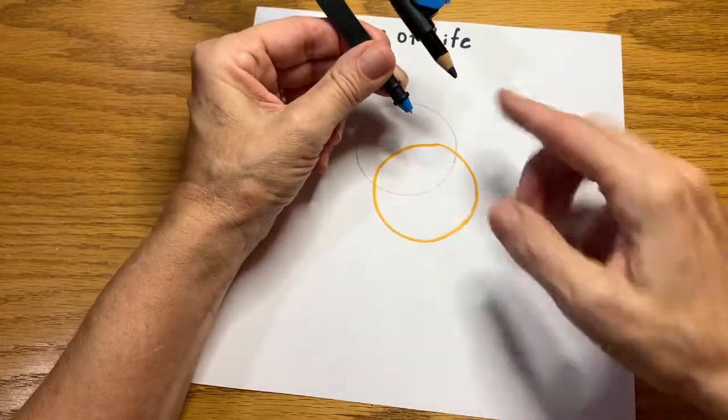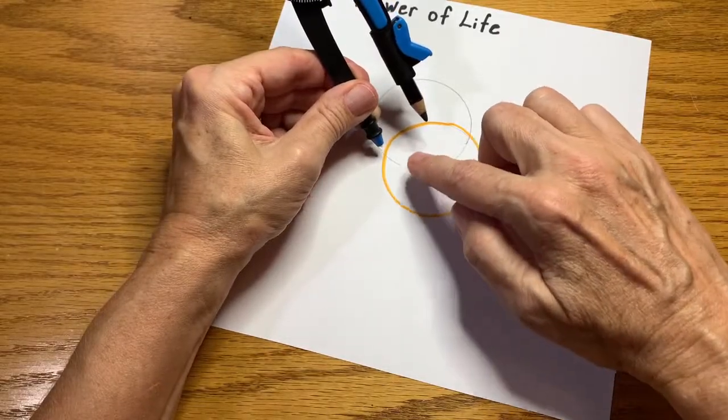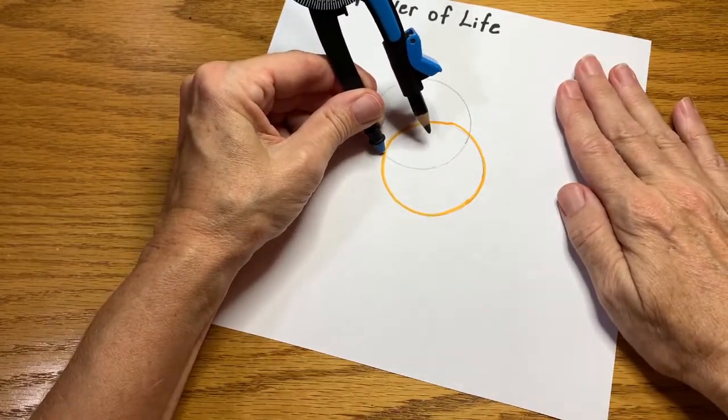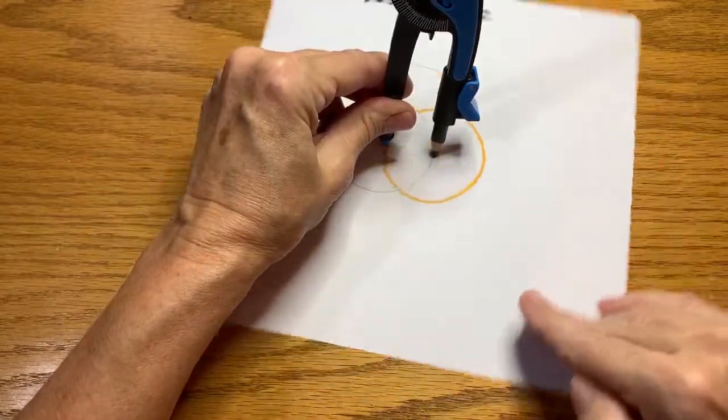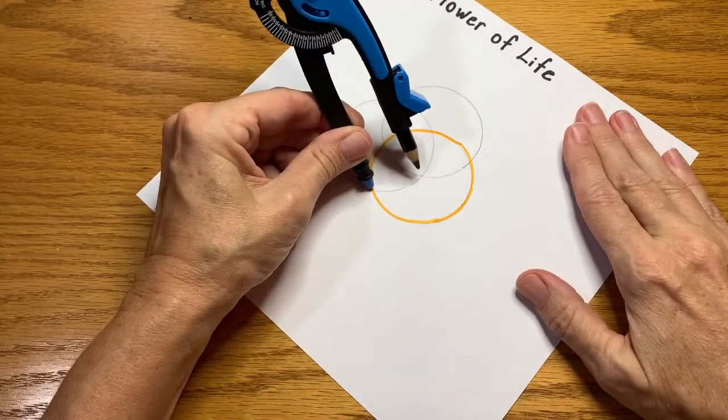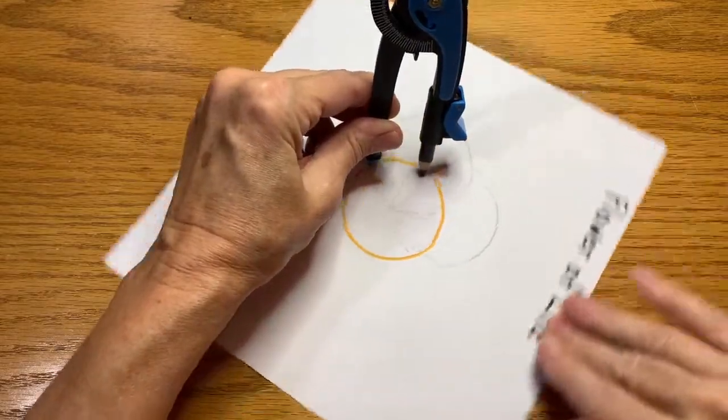I'm now going to place the point wherever a circle intersects the original one. So right here is an intersection. I make another circle. Here's an intersection and I make another circle.